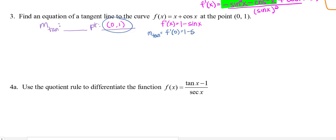I'll substitute in a 0 for x. We should know sine of 0 is 0, so I have 1 minus 0. The slope of the tangent line is 1.